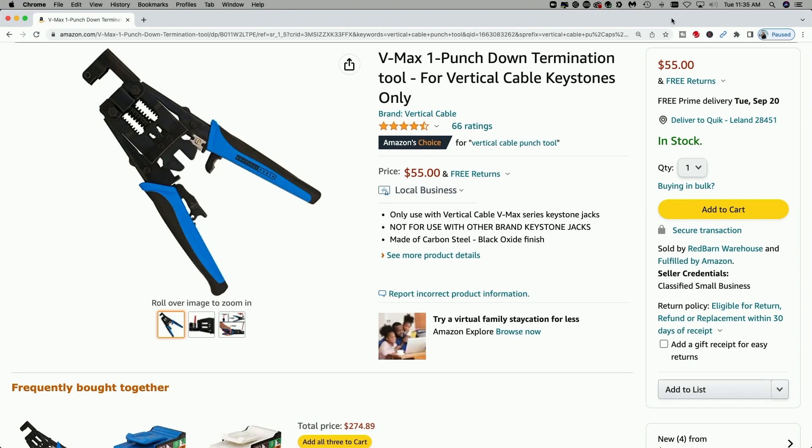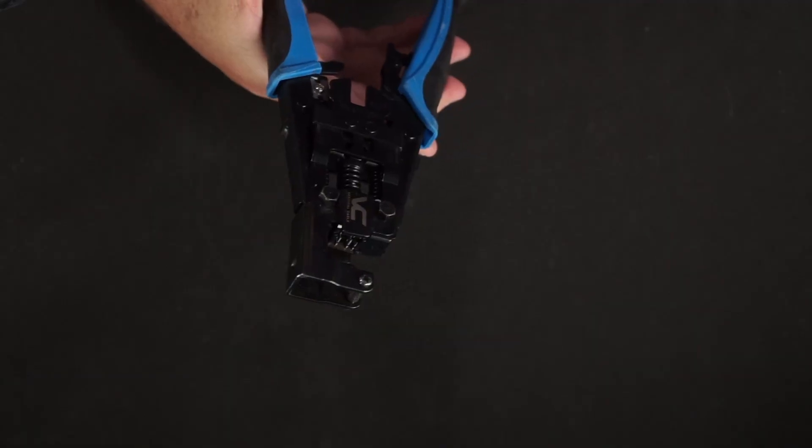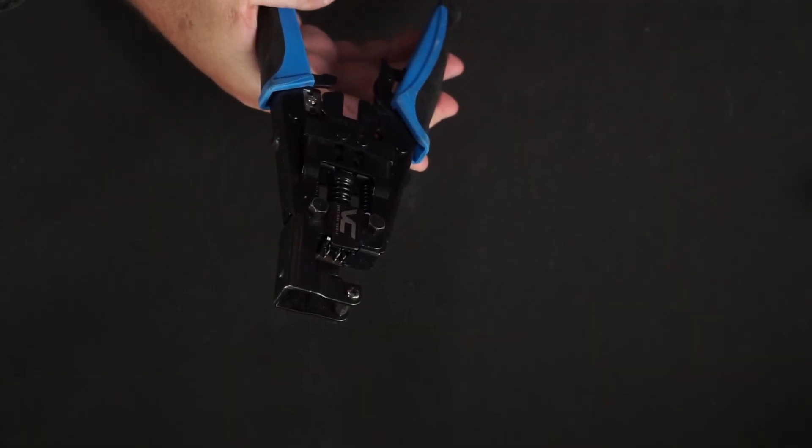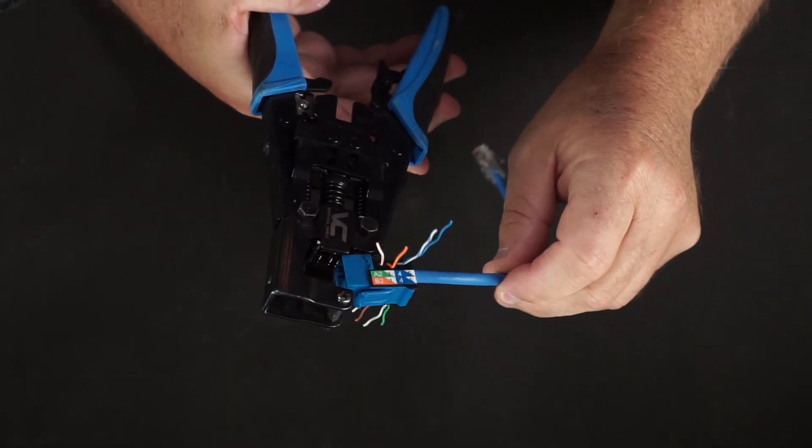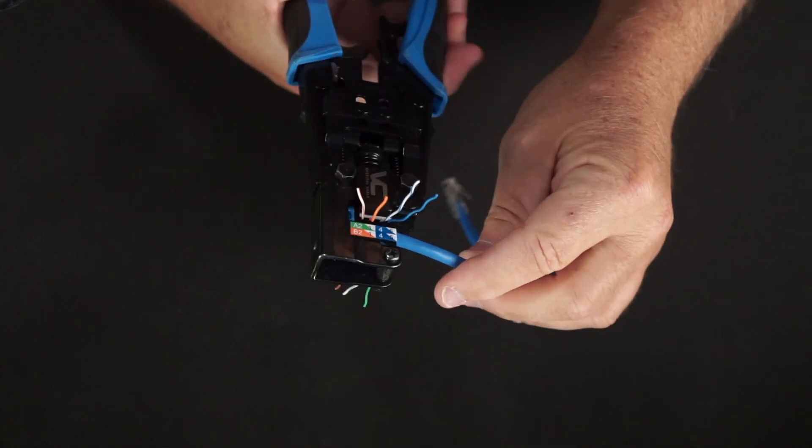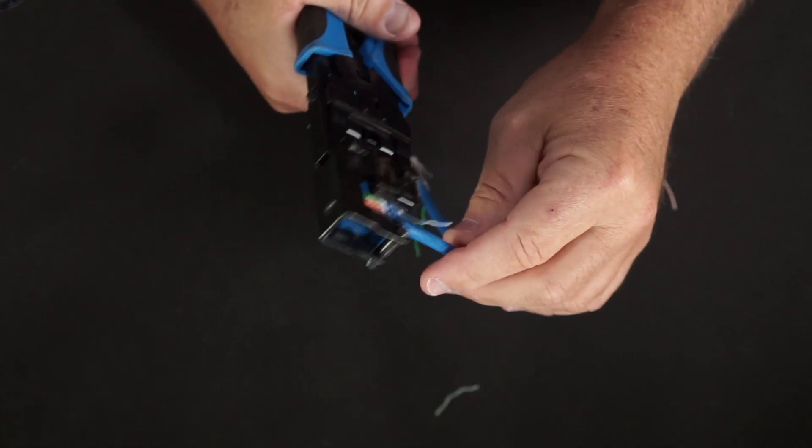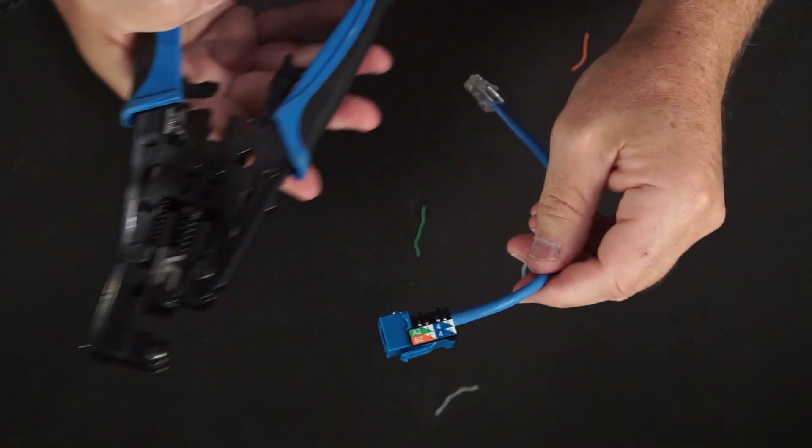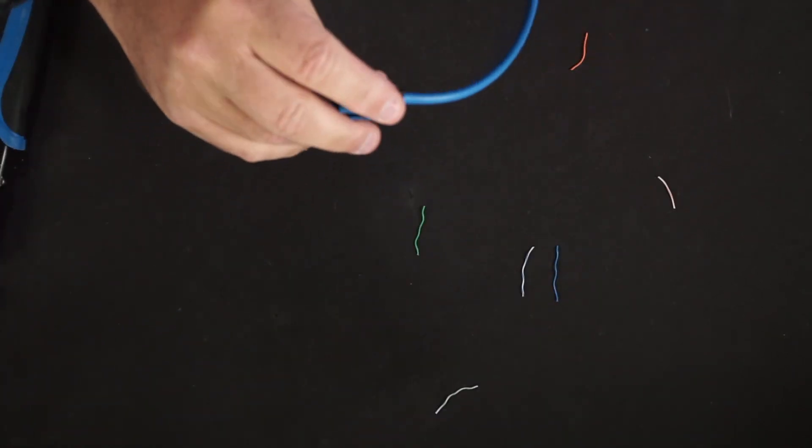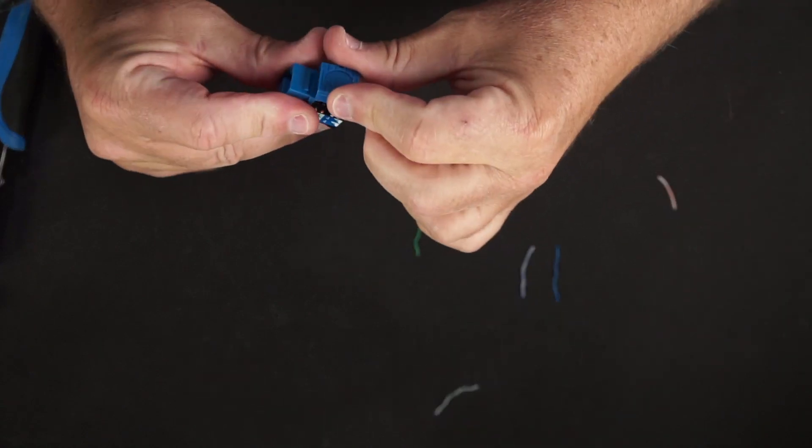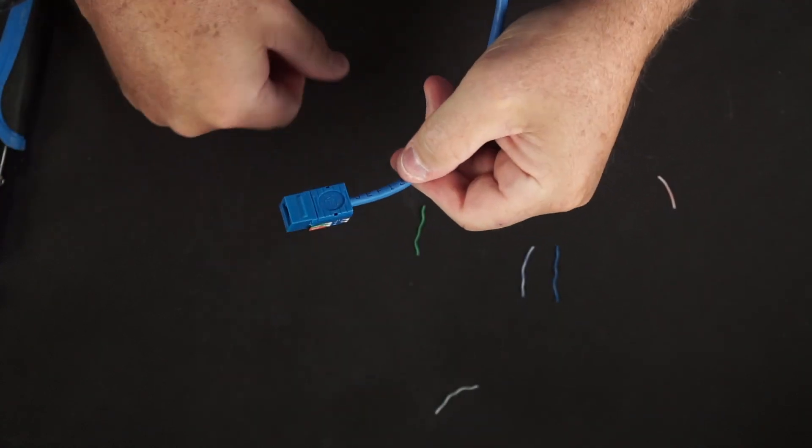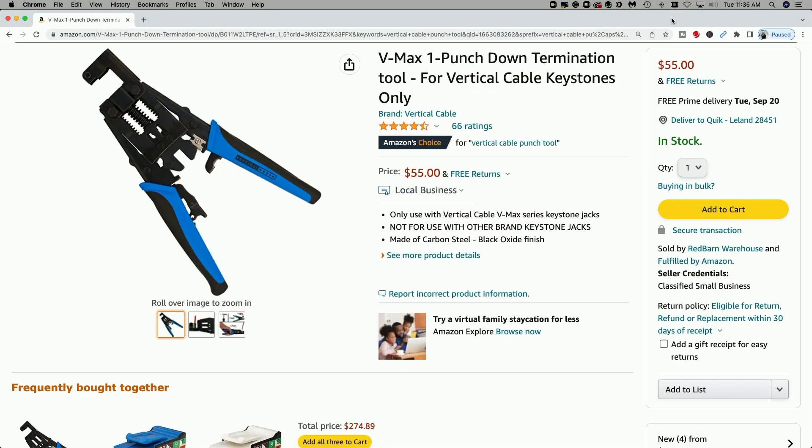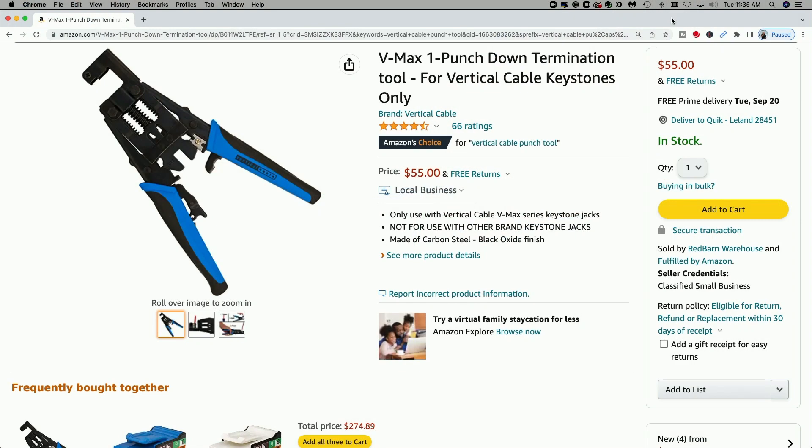And coming in at number one, the VMAX 1 punch down termination tool for vertical cable keystone jacks. It uses the VMAX series keystone jacks. They're a bit more expensive, but they are quality and worth the time savings. It punches down all eight conductors in the cable in one crimp rather than having to punch down eight individual conductors with a traditional punch down tool. This is a great time saver and probably the best $55 I've ever spent.